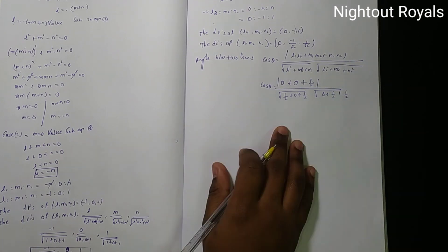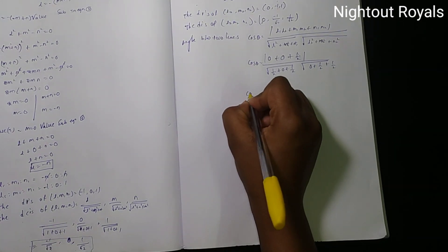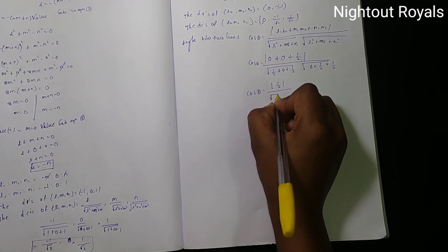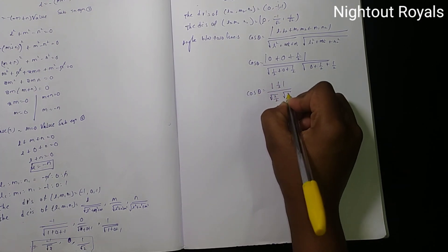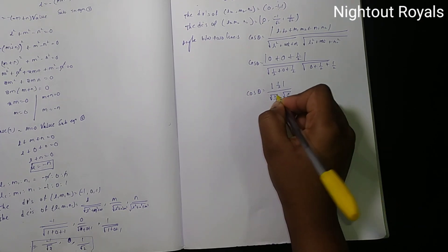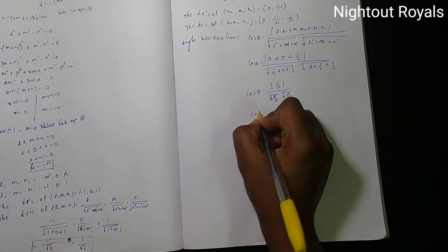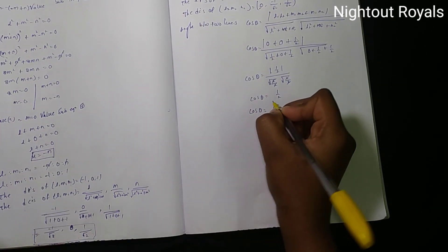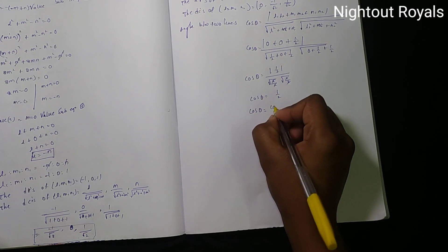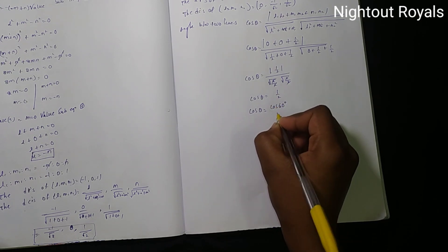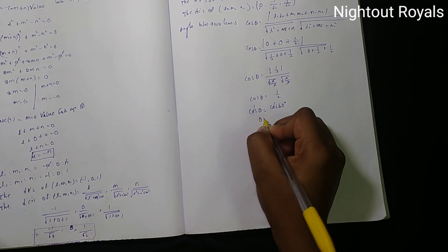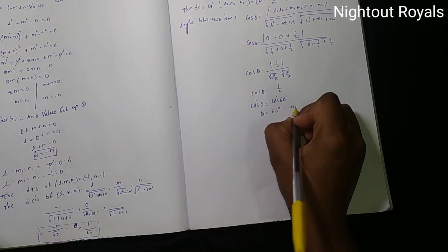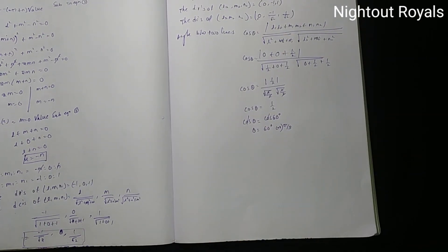So cos theta equal to mod of 0 plus 0 plus 1 by 2, divided by root of 0 plus 1 by 2 plus 1 by 2. This gives cos theta equal to 1 by 2, therefore theta equal to 60 degrees, which is pi by 3. This completes the problem.